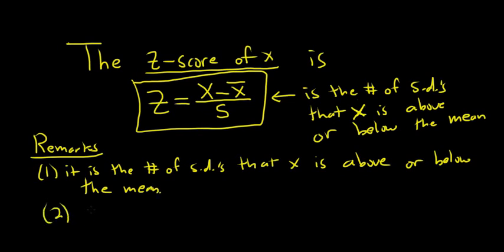Two: if you have a positive z-score, then your x-value is above the mean. If you have a negative z-score, then your x-value is below the mean.